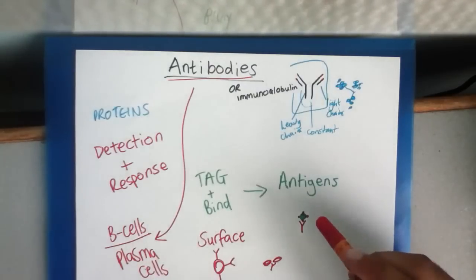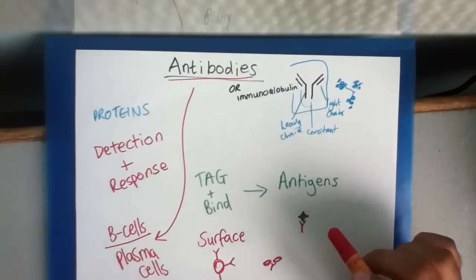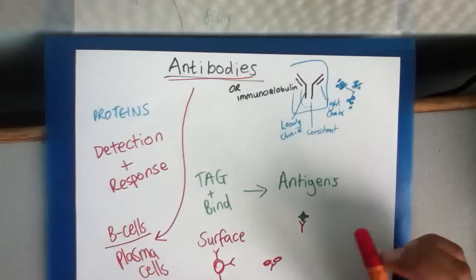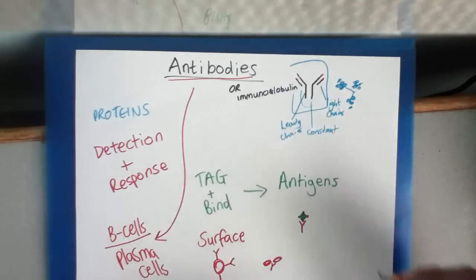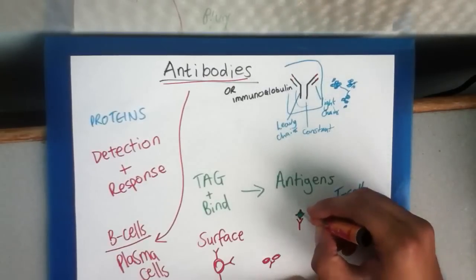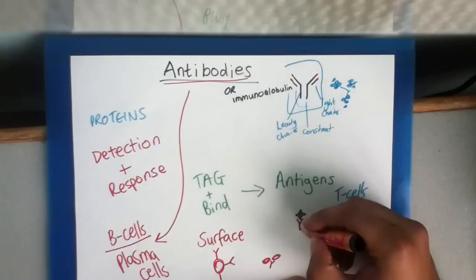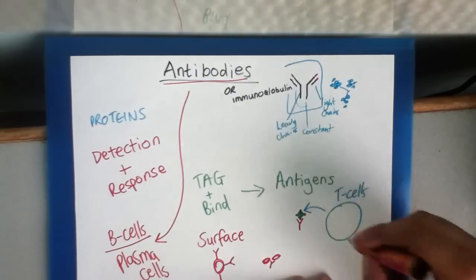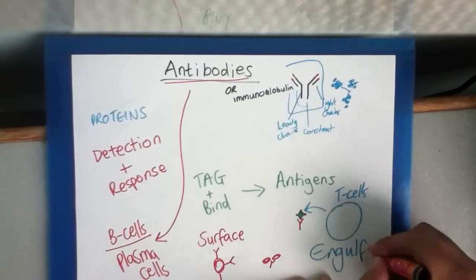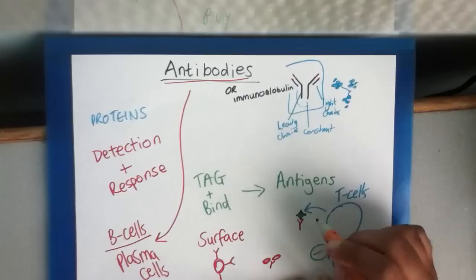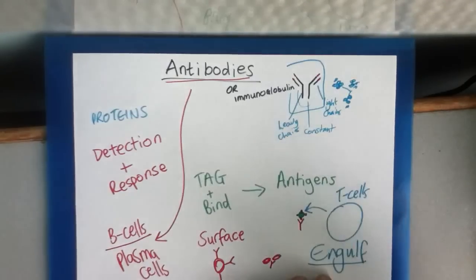This binding to the antigen, what it does is it initiates sort of a recognition from T cells. T cells will recognize this antibody has binded onto this antigen. And what it will do is it will attack and engulf the foreign body. Because we do not want this antigen in our body. It's a foreign body. And the body wants to remove this. So it will engulf this antigen.